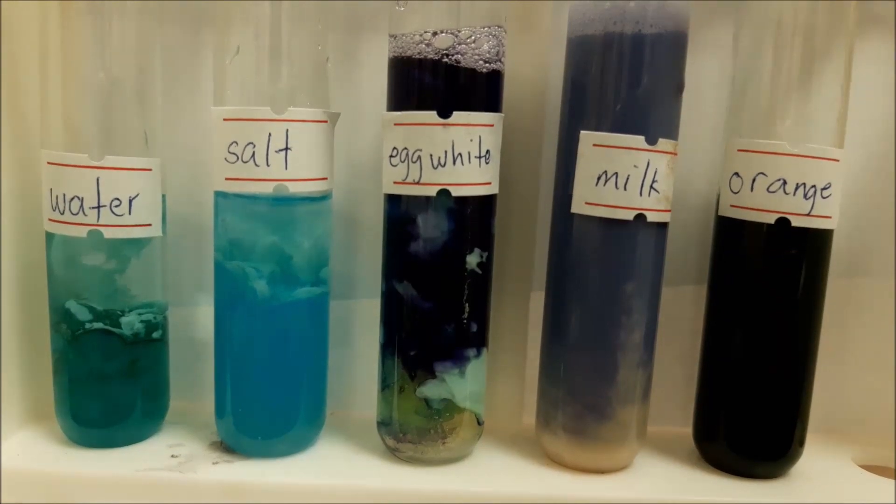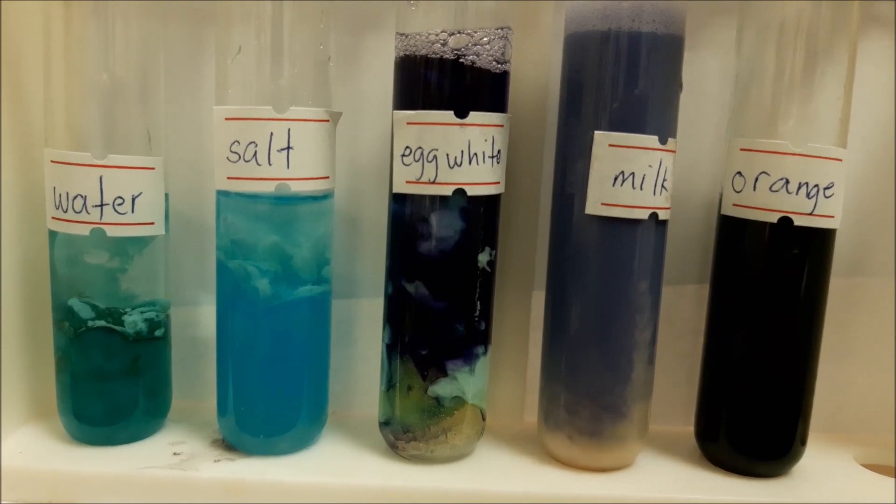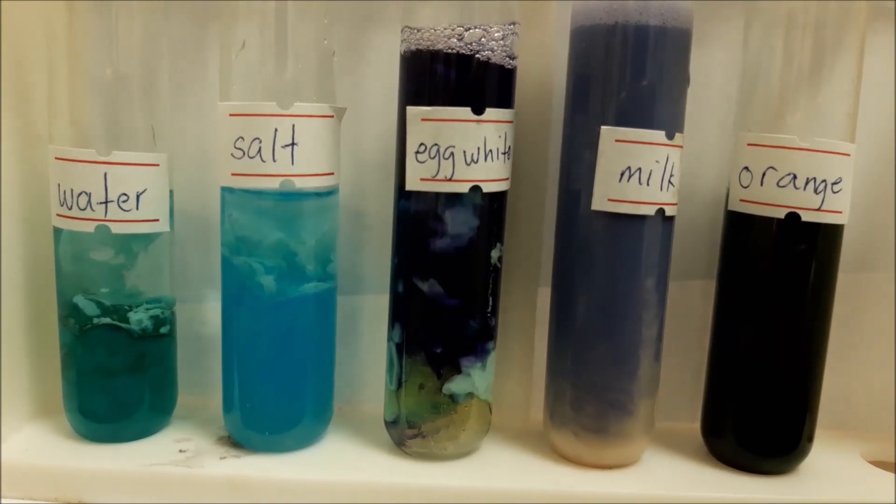So from this experiment, we can see that the egg white and the milk turned purple. So it means these are the food items that have protein.